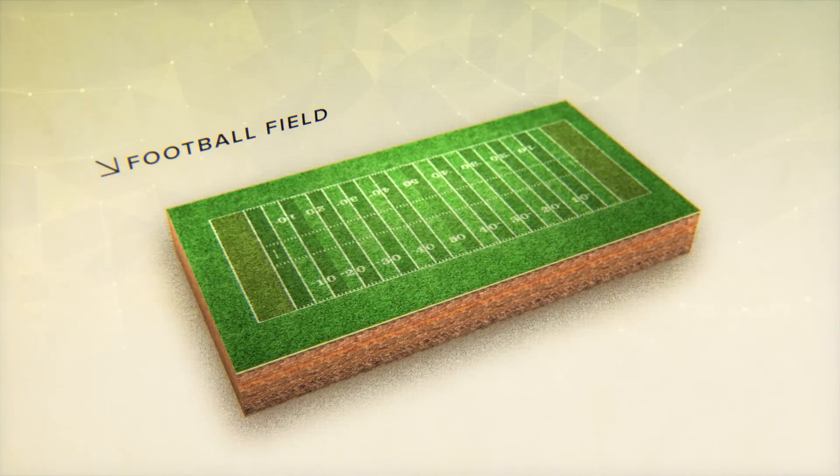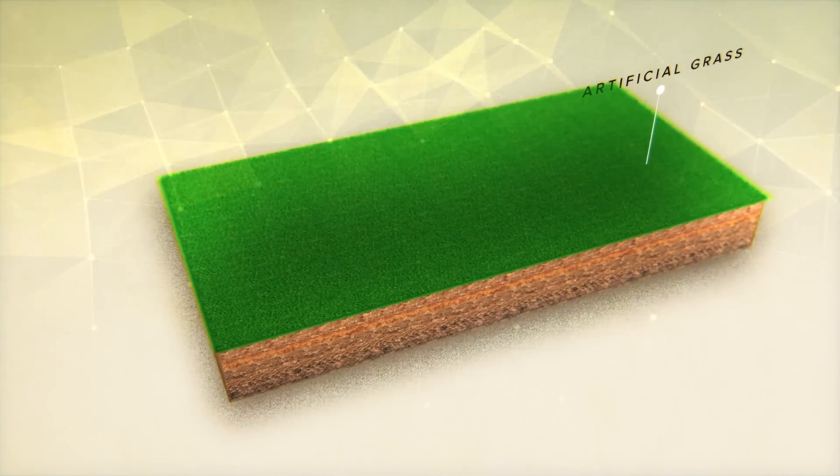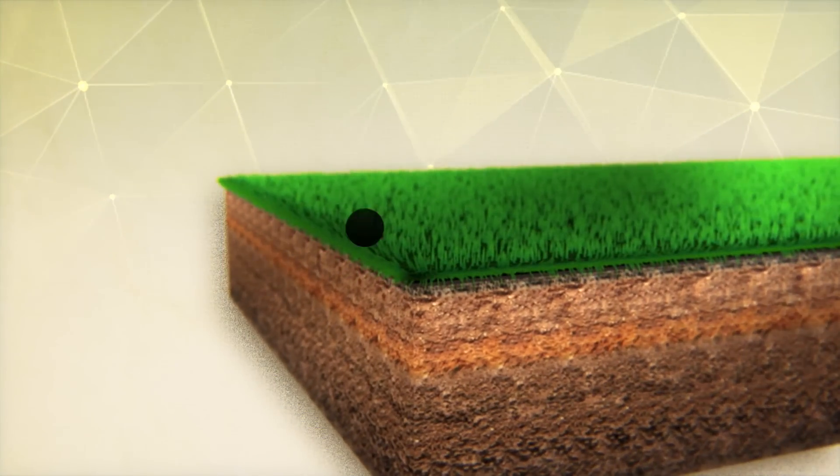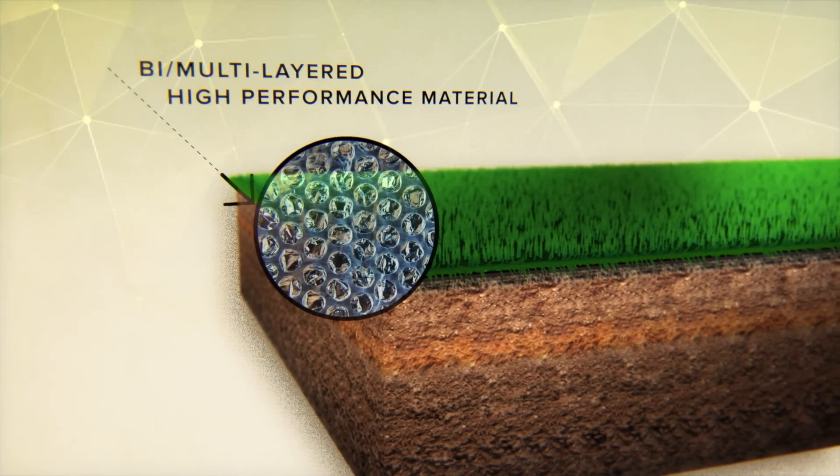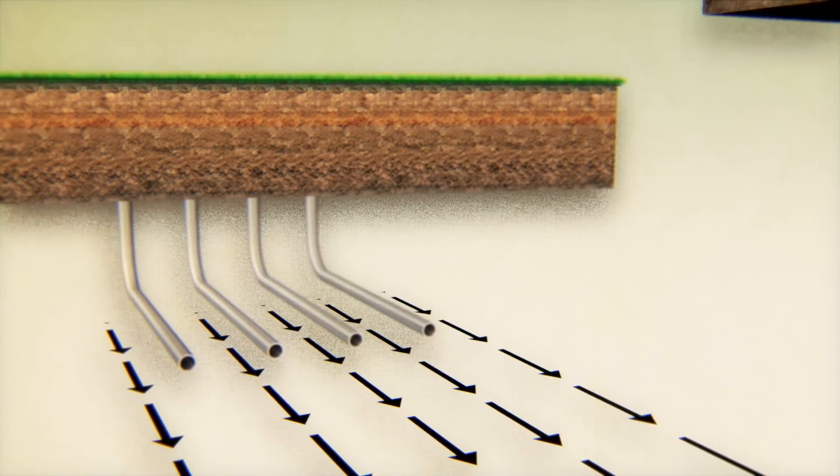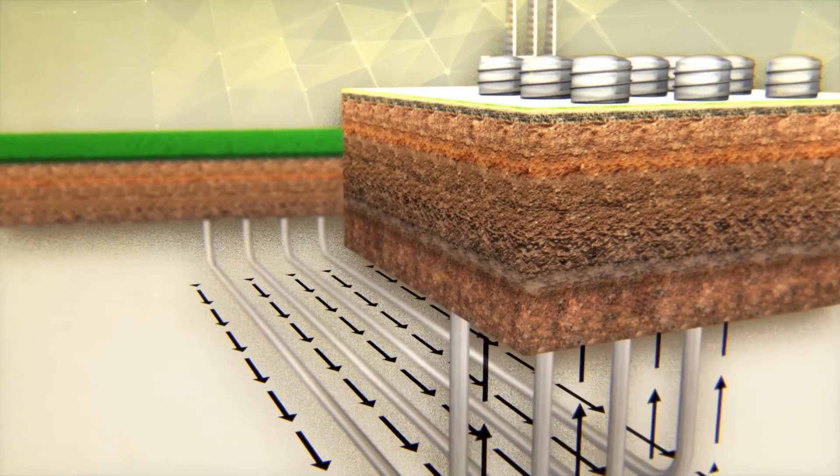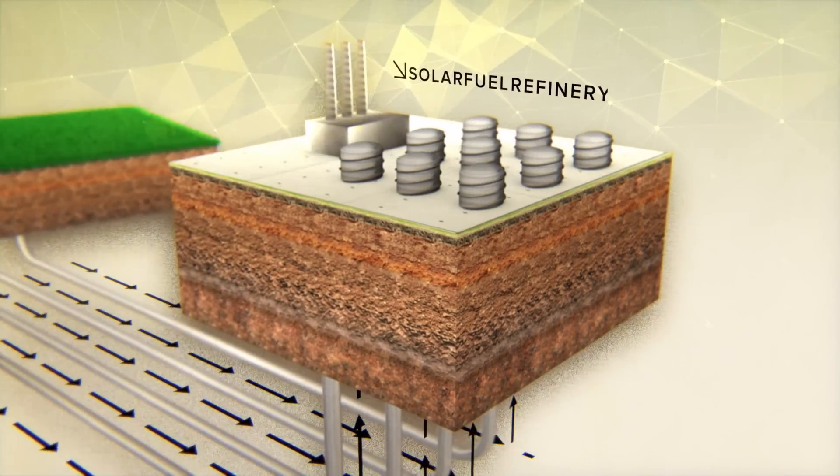What we envision is football field-sized areas. You roll out artificial grass that has this bi-layer or multi-layer high-performance material and then there's drainage pipes that wick out the fuel and you store that or more likely bring it to a solar fuel refinery.